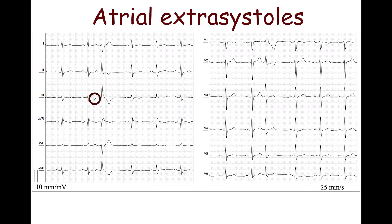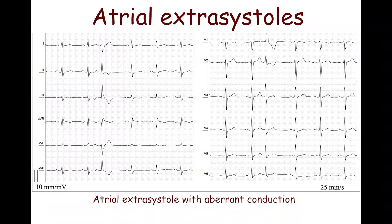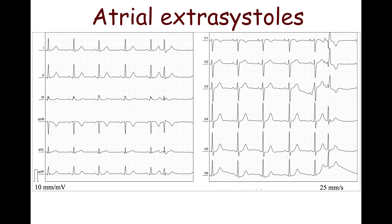It may be misinterpreted as a sinus exit block or atrioventricular block. Sometimes a premature P-wave may be followed by a wide QRS complex with a bundle branch block pattern — this is atrial extrasystole with aberrant conduction. The right bundle branch block pattern is more common, and it is sometimes very difficult to find the P-wave merged with the T-wave of the previous beat. Aberrantly conducted atrial extrasystoles are difficult to distinguish from ventricular extrasystoles.